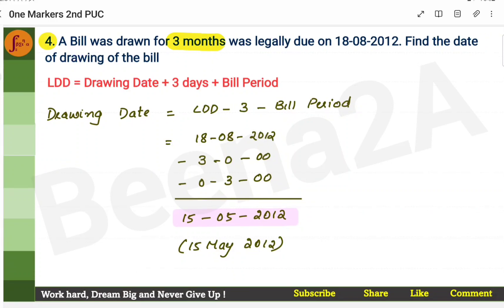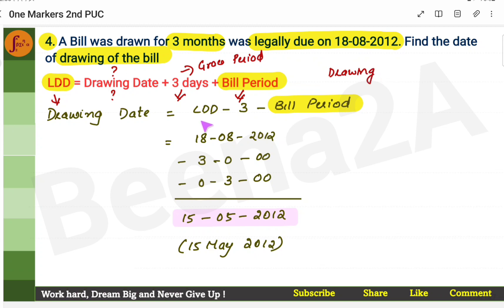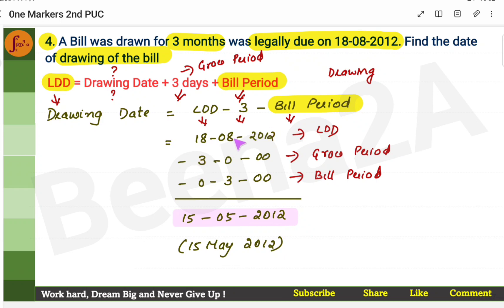Now here are some problems. A bill was drawn for three months — bill period is three months. The legally due date is 18th August 2012. Find the date of drawing of the bill. Grace period is always three days. To find the drawing date: Drawing Date = LDD − 3 days − bill period.